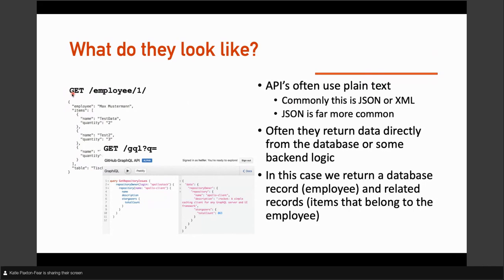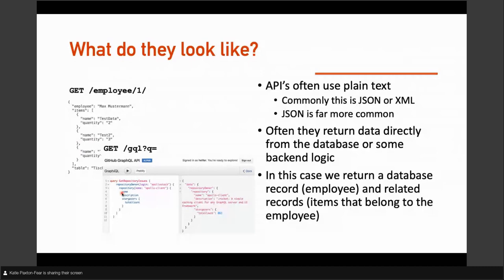This API endpoint — 'endpoint' just means a URL that returns something — is 'get employee one.' It has the employee name, and then comes with related items belonging to the employee. We can imagine this as a database: you're getting a specific employee with the ID of one and getting things related to that employee. It's really quite close to how a database is structured. Down here, this is an example of a GraphQL API — you find APIs that are slightly different in style. You're still seeing the same data structure: repository owner, repository, name, description.